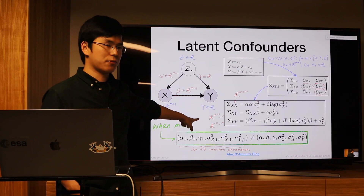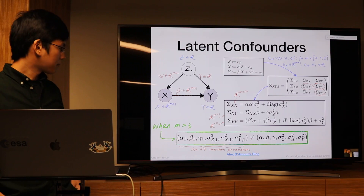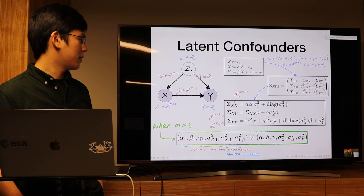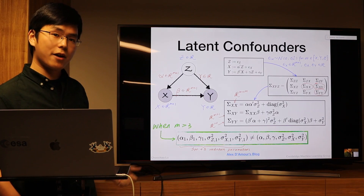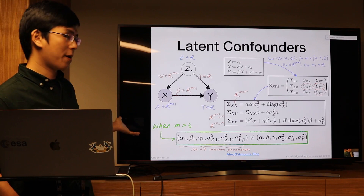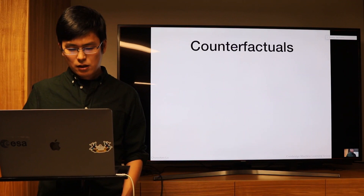In a simple example with observed X (m-dimensional) and Y (1-dimensional) and unobserved confounder Z, you can write down the joint distribution and extract the covariance matrix between X and Y. The left parameterization has m²+m+1 parameters; the right has 3m+3 parameters. When m>3, multiple parameter sets lead to the same covariance matrix, making parameters non-identifiable. That's why latent confounders are so difficult even in causal inference.